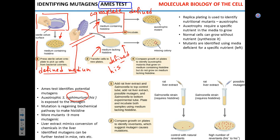Important question: what must Salmonella be able to make in order to grow on the bottom medium? It should be able to make histidine. We do not provide histidine, so only cells that can make their own can grow on that plate. Only if you can make histidine can you grow on the medium without histidine.